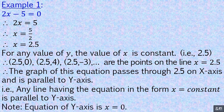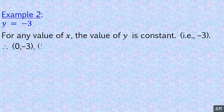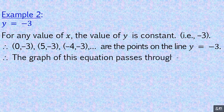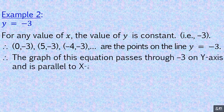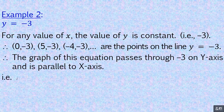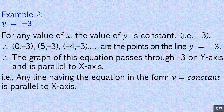Note: the equation of the y-axis is x equals 0. Example 2: y equals negative 3. For any value of x, the value of y is constant at negative 3. So points like (0, negative 3), (5, negative 3), (negative 4, negative 3), etc., lie on the line y equals negative 3. The graph passes through negative 3 on the y-axis and is parallel to the x-axis. Any line with equation in the form y equals constant is parallel to the x-axis. Note: the equation of the x-axis is y equals 0.